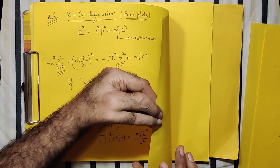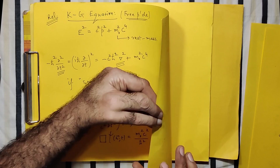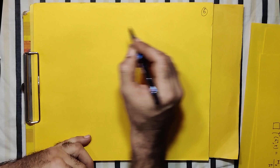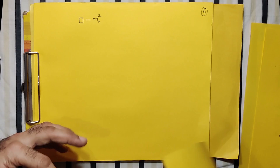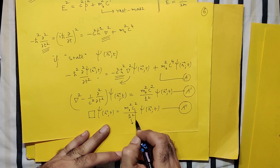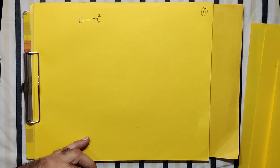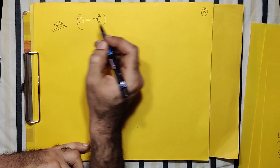The same equation can be written as □ psi = (m₀²c²/h-bar²) psi. In a natural unit system where c = 1 and h-bar = 1, the Klein-Gordon equation takes the very simple, sweet form: □ psi = m₀² psi, which is the equation we have derived.